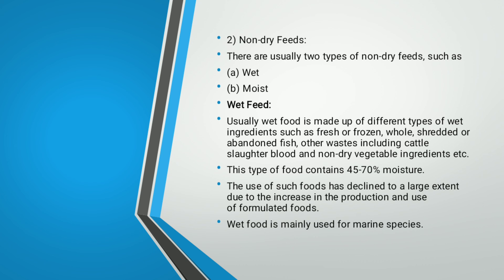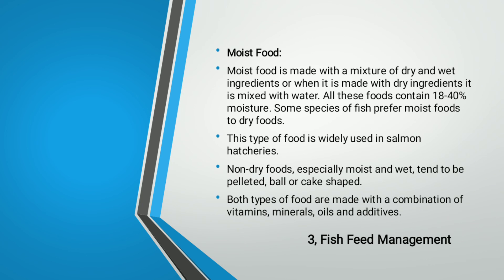The use of wet feeds has declined largely due to increased use of formulated feeds, which provide higher growth rate, higher nutritional value, lower cost, and lower water pollution. Wet food is mainly used for marine species. Moist food is made with a mixture of dry and wet ingredients, or dry ingredients mixed with water, and contains 18–40% moisture. Some fish species prefer moist foods because dry foods are difficult to swallow. Moist food is used in salmon hatcheries. Non-dry foods tend to be pelleted, ball, or cake shaped, and both types are made with a combination of vitamins, minerals, oils, and additives depending on the fish's growth stage.